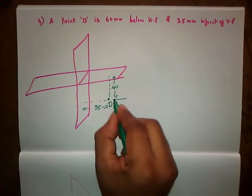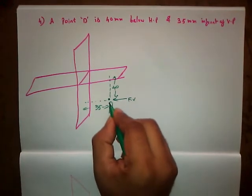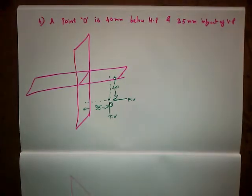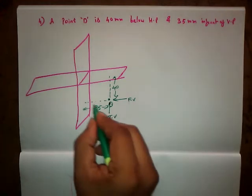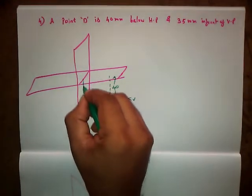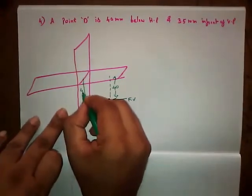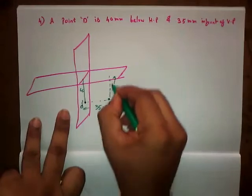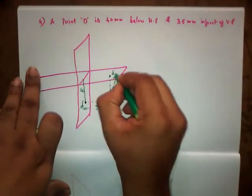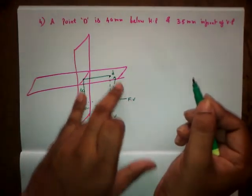Now we need to view horizontally — front view — and this is going to be our top view. If I view from the front view, this is going to be our D dash, and this distance is going to be the opposite distance, that is 40 mm. And if I view from vertically, this is going to be our top view. The name of the point is small d, and this distance is going to be the opposite distance, 35 mm.